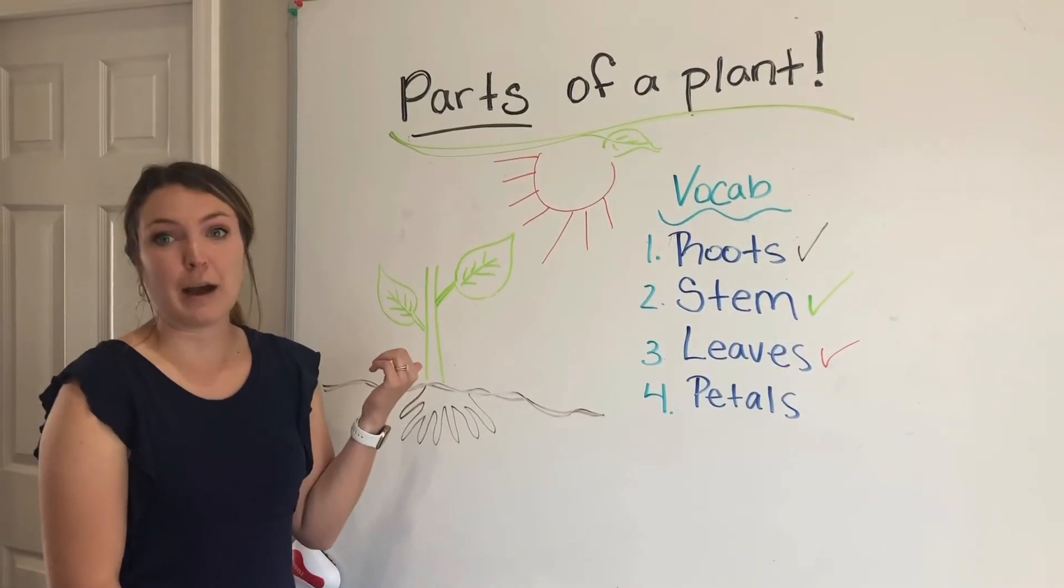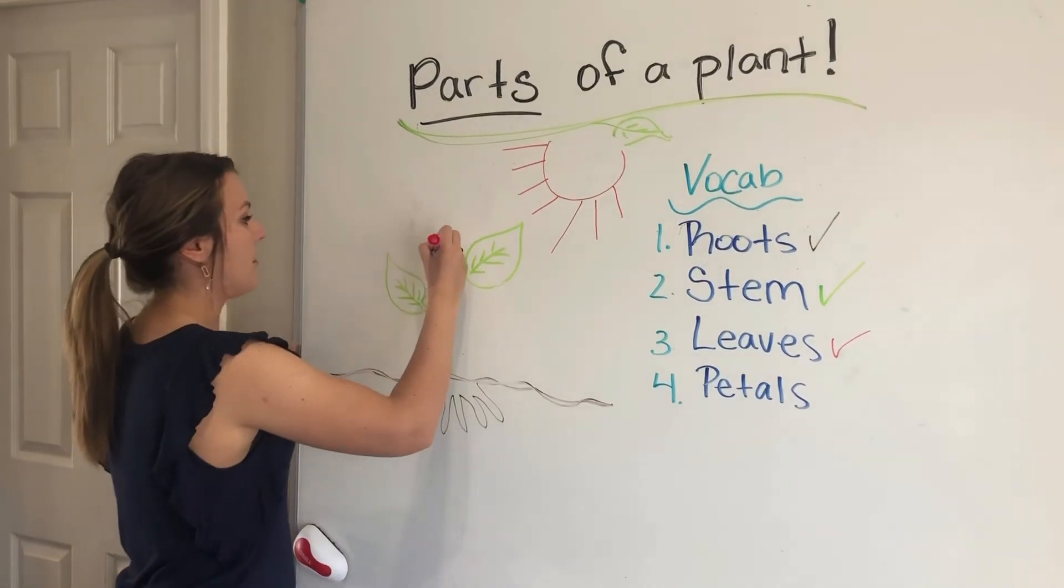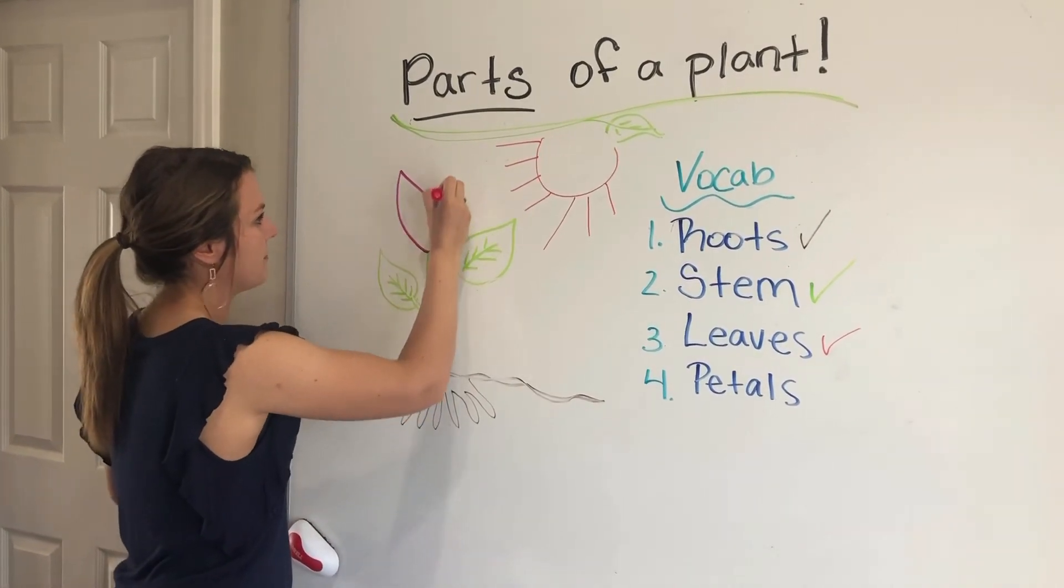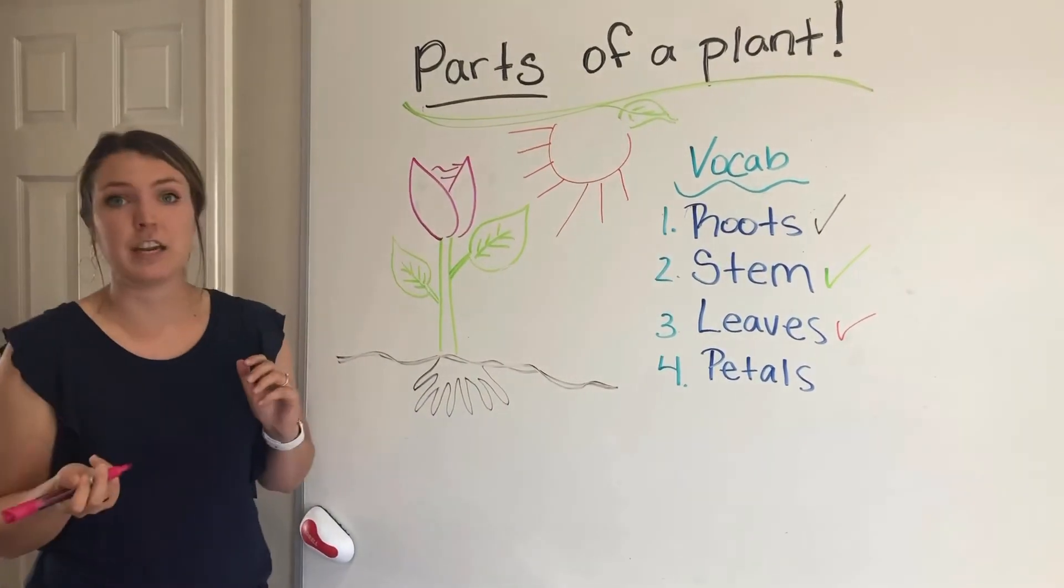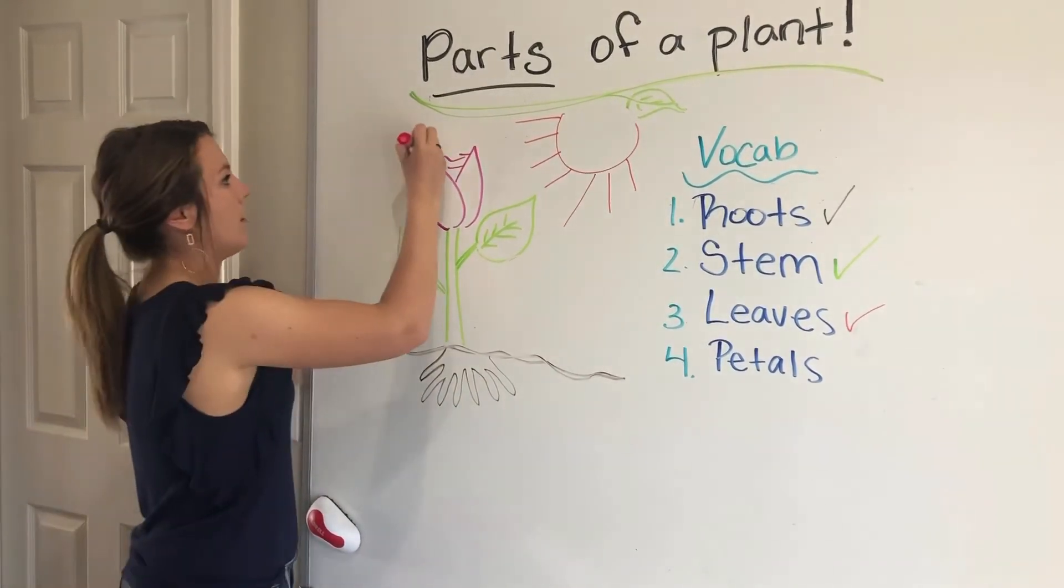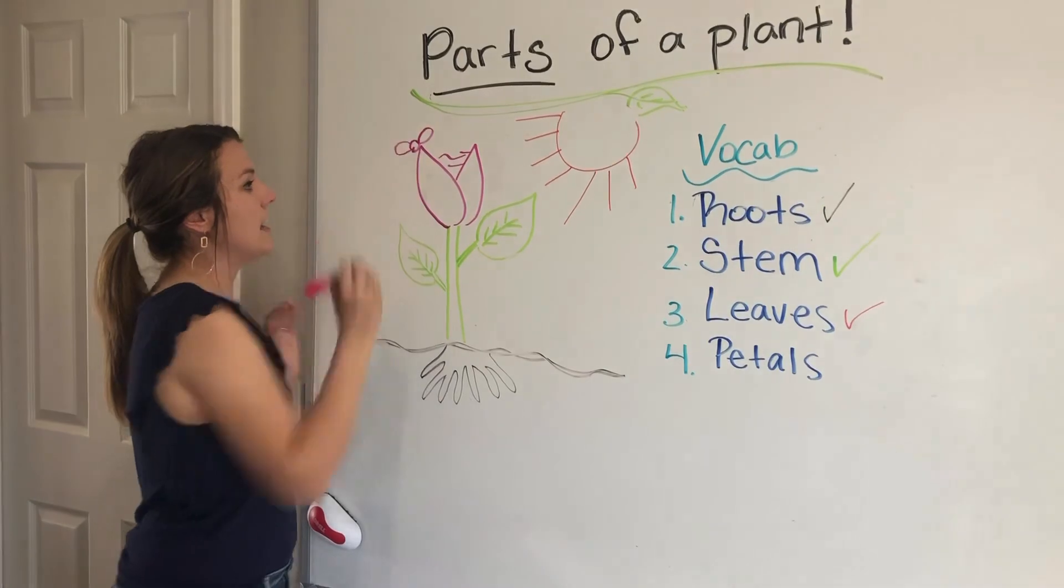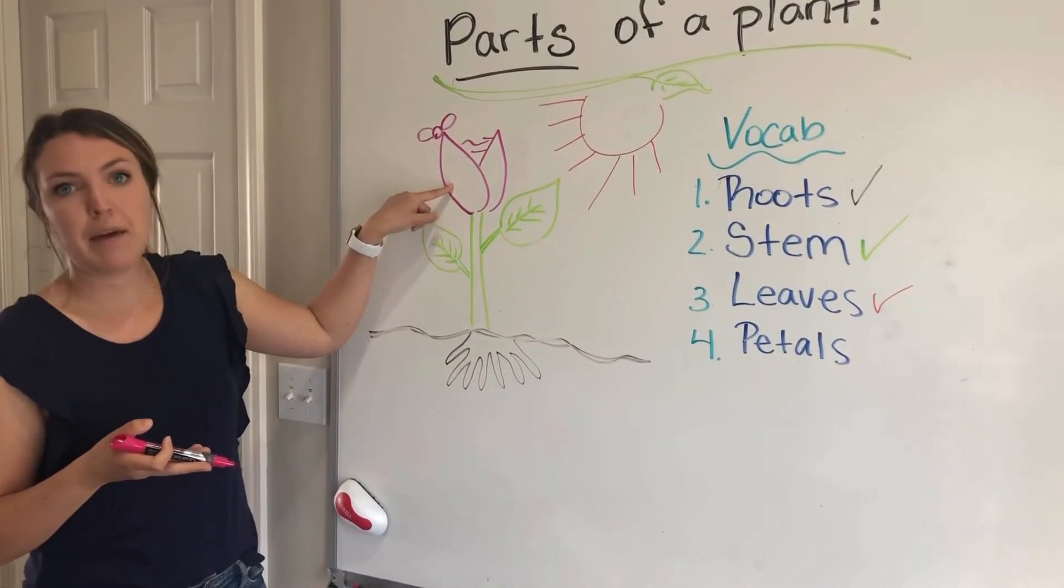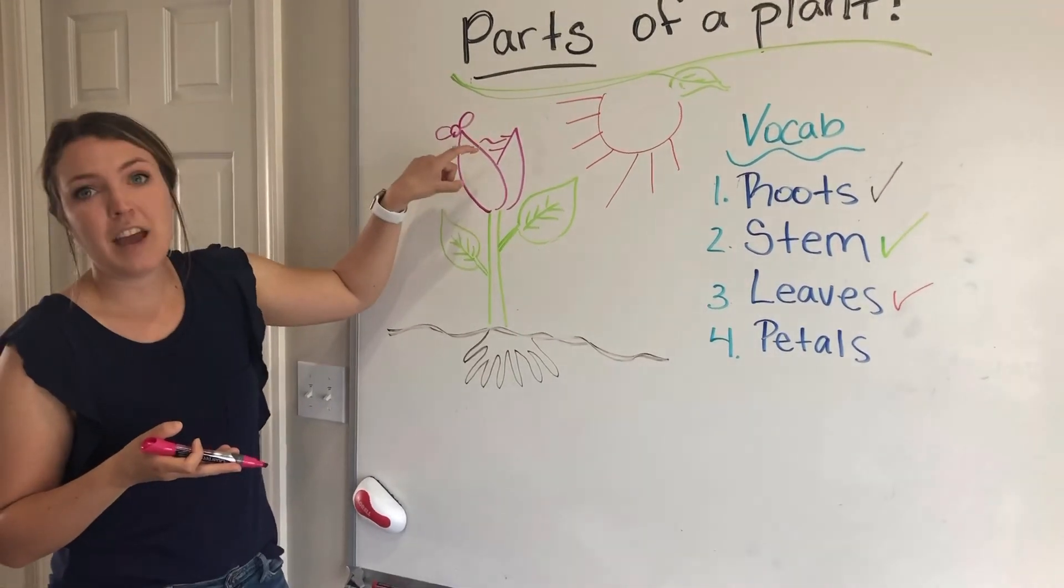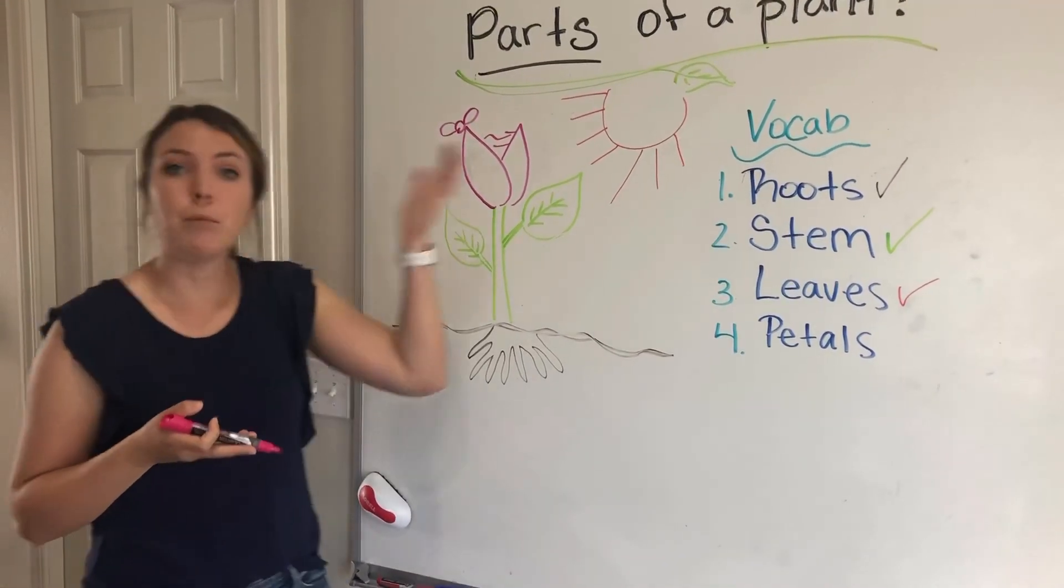And the last part of our flower is gonna be the petals. So I'm gonna draw our petals right here. And the job of the petals is to attract pollinators, like bees. So here comes the bee. It attracts the bee because it is so beautiful. And then also, the petals have another important job, and that's to have seeds. And the seeds will help the flower make more flowers.